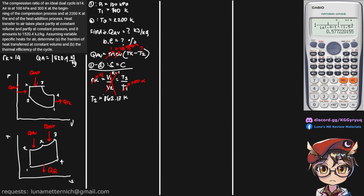We should also find P2. Using the isentropic relationship with T2 = 862.13 K, T1 = 300 K, P1 = 100 kPa, and K = 1.4, we get P2 = 4023.28 kPa.